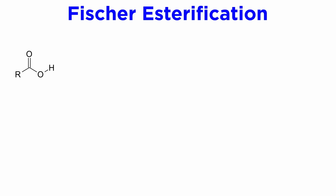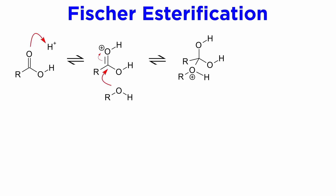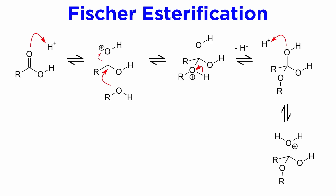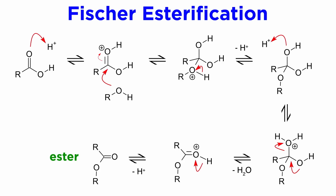Another method of converting carboxylic acids into esters is Fischer esterification. This is acid-catalyzed, so the carbonyl oxygen is protonated, and then an alcohol can attack the activated carbonyl carbon. After shuffling some protons around and the loss of water, we end up with the relevant ester, where the alkoxy group is derived from the alcohol that initially attacked.